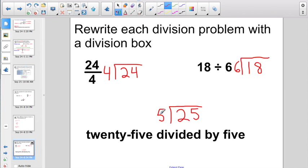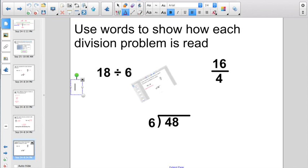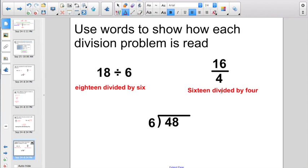When you use a division box, the number inside is the number that gets pronounced first. Here, they're going to ask us to use words to show how each division problem is read. So, 18 divided by 6. Not too tough. This one with the division bar, 16 divided by 4. So, let's just go ahead and use our words. 16 divided by 4. The only potentially tricky one here is, with the division box, 48 is our dividend. We say 48 first. This is pronounced 48 divided by 6.